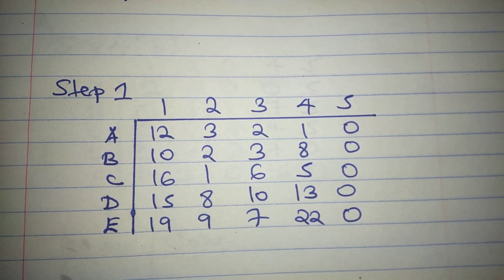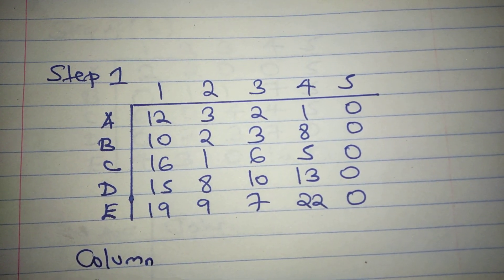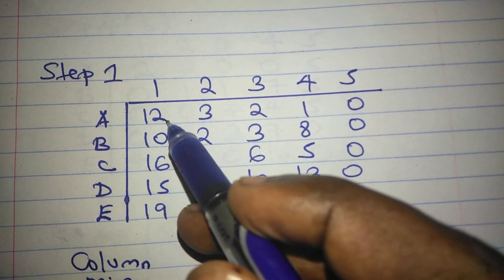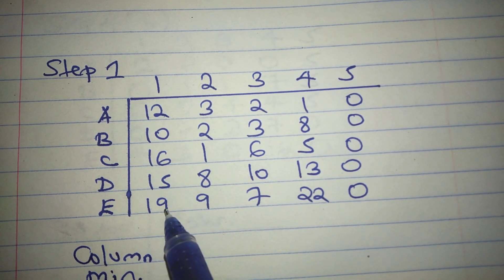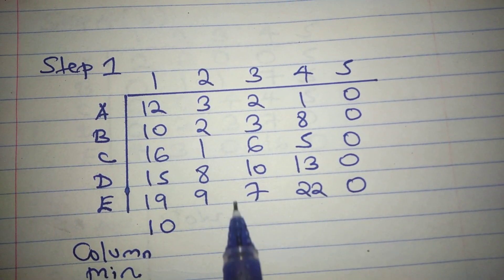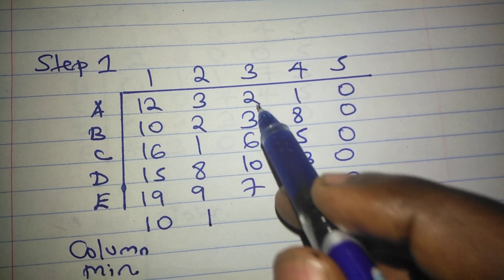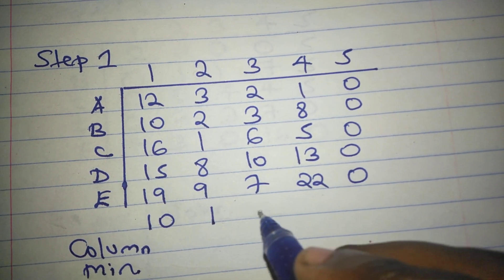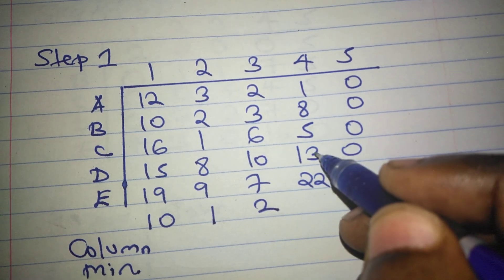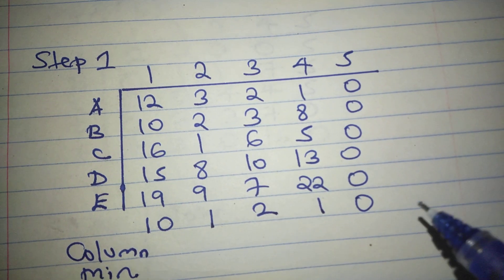Step 2 is to get the column minimum. In the first column we have 12, 10, 16, 15, 19 — the minimum is 10. Second column: 3, 2, 1, 8, 9 — the lowest value is 1. Third column: 2, 3, 6, 10, 7 — the lowest value is 2. Fourth column: 1, 8, 5, 13, 22 — the lowest value is 1. The fifth column already has a 0, which is automatically the minimum.